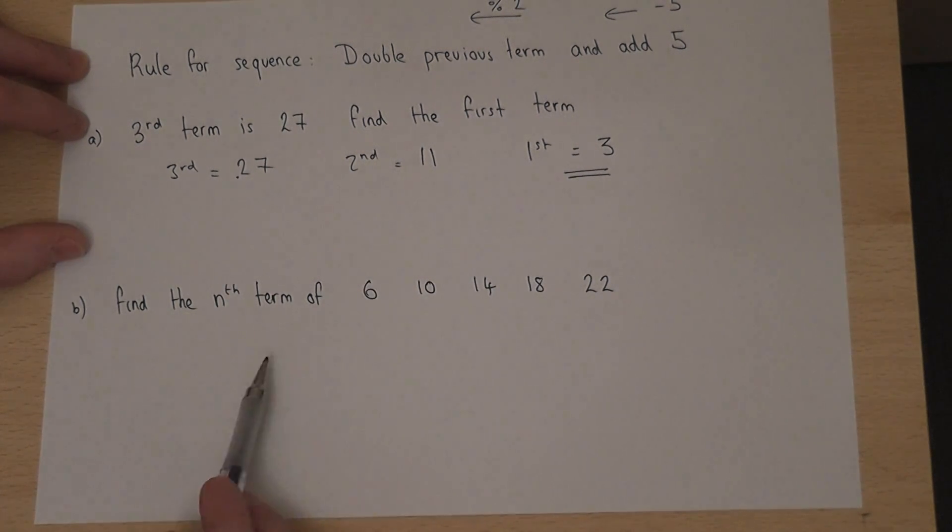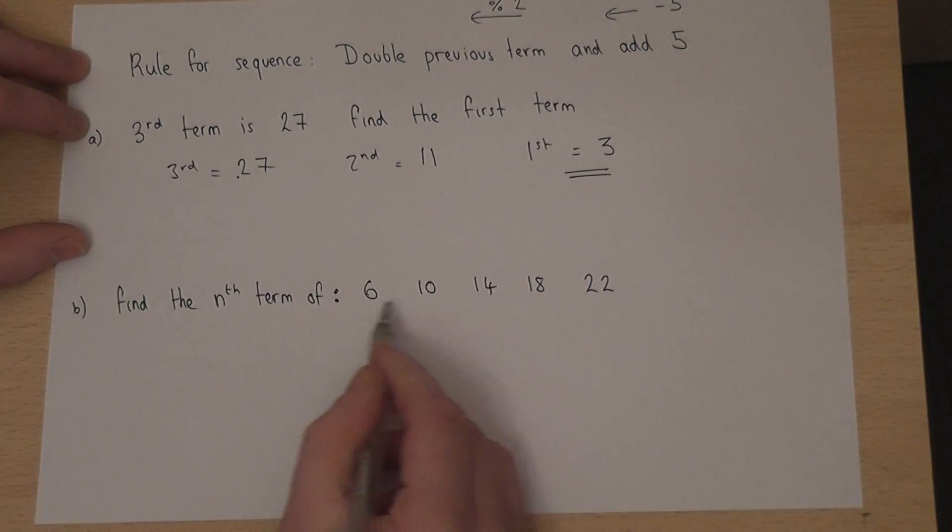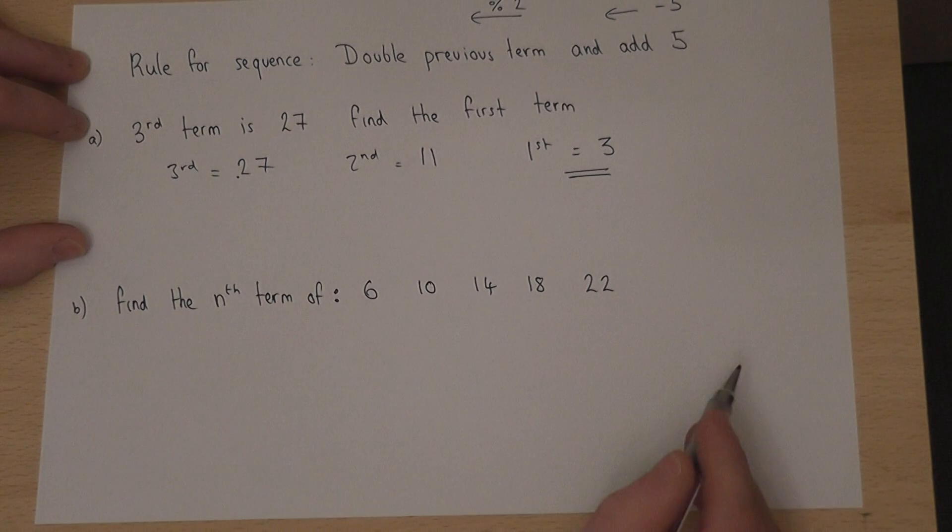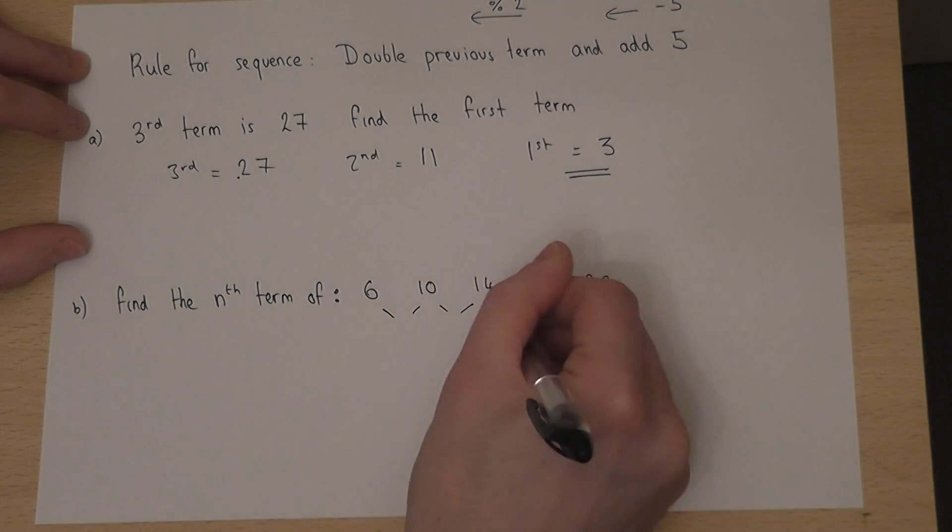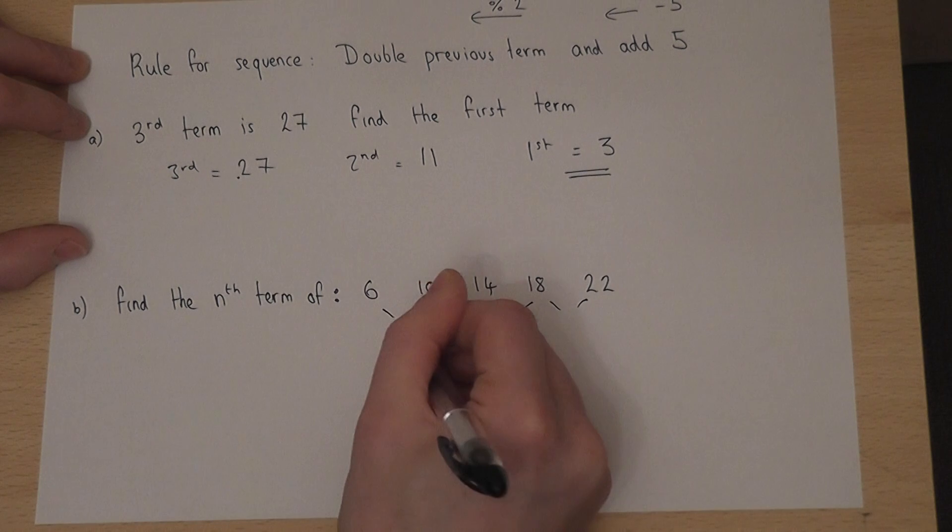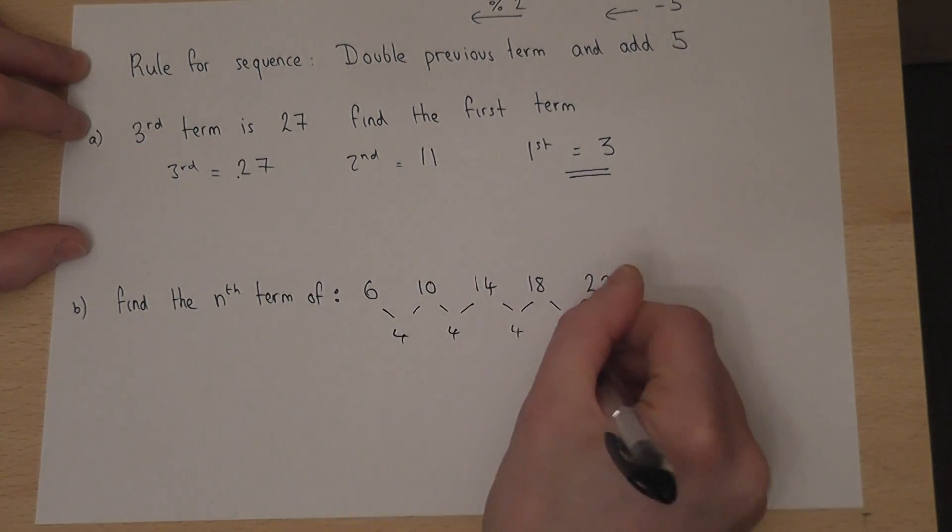In the second part, we're asked to find the nth term of a sequence, given by 6, 10, 14, 18, 22. Now, we observe how there's a common difference. Each term goes up by 4.